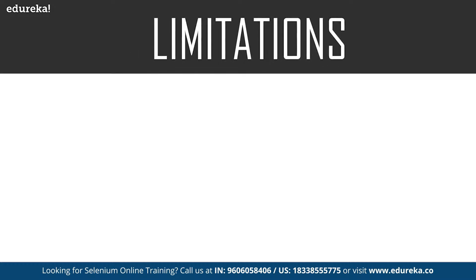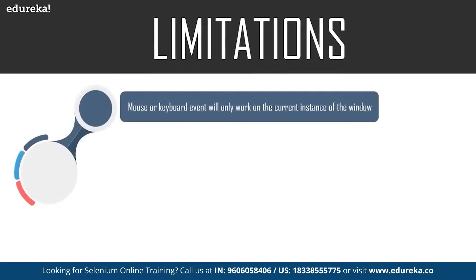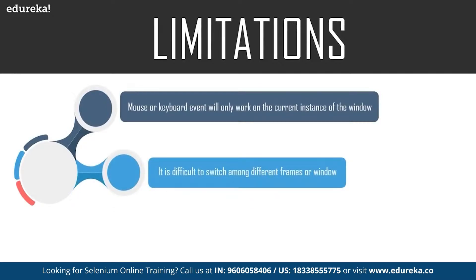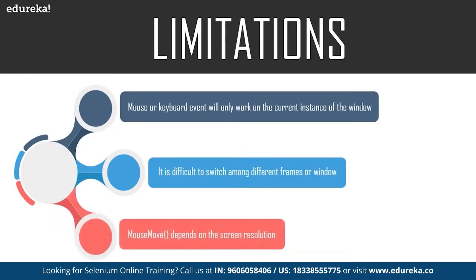Now let's take a look at the limitations of this Robot class. The mouse or keyboard event will work only on the current window — it is difficult to switch among different screens or windows. If code is executing a robot event and execution moves to another window, the mouse or keyboard event will still act on the previous window. Methods like mouseMove depend on screen resolution, so using XY coordinates means tests will behave differently on different screens. And if you're running tests in a virtual machine, script failure rate is higher.